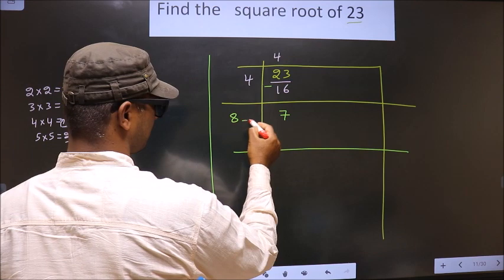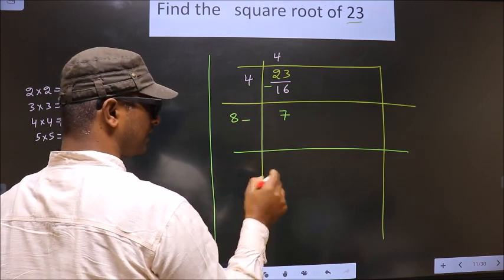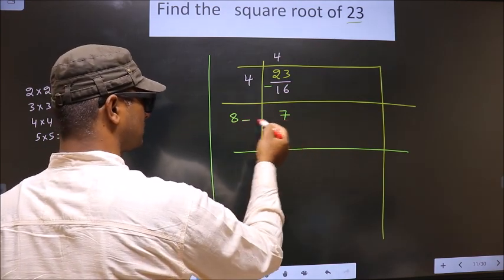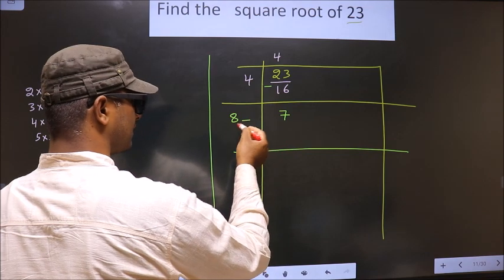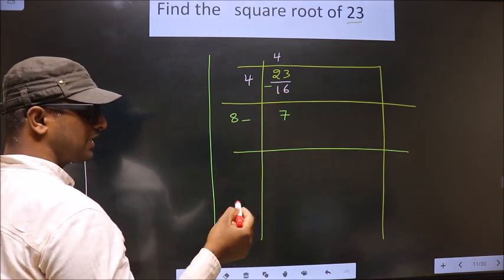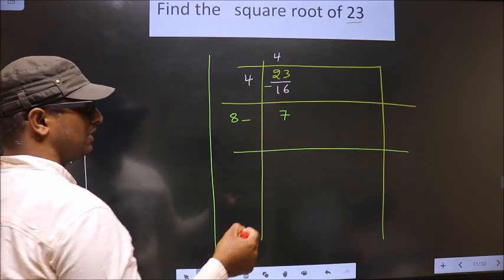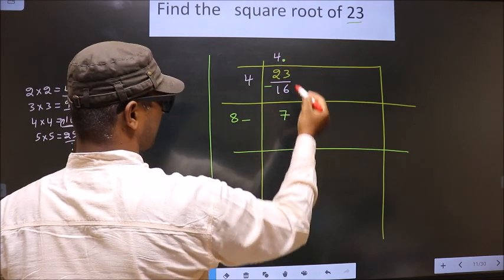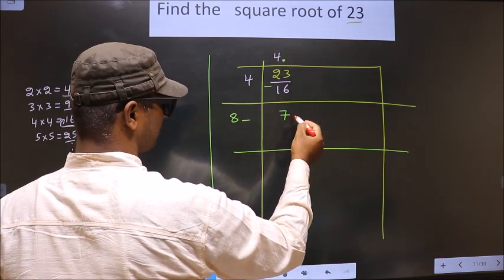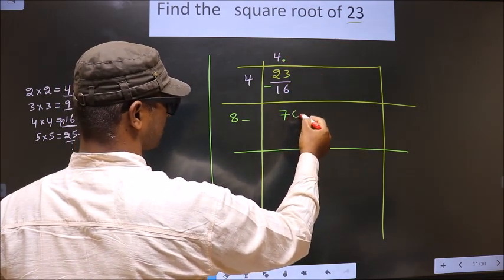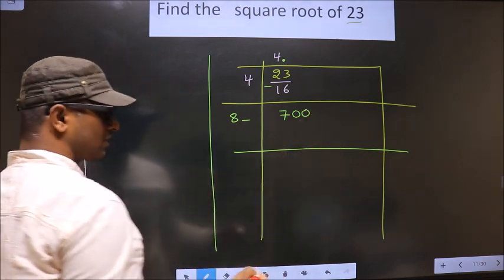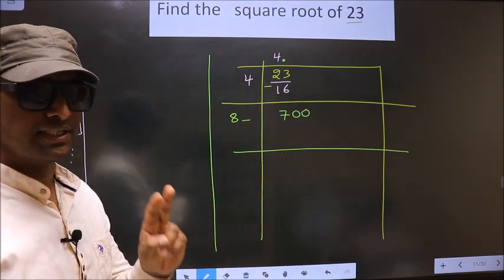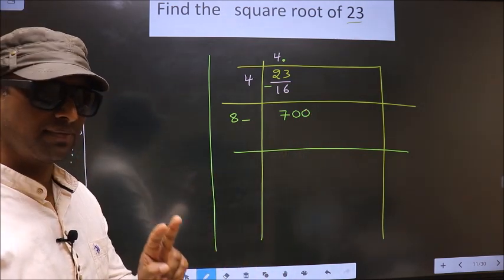Now we should write a number here. But when we write the number here, this number is smaller than this. So in normal division, we would put a dot and take one zero, but here while finding the square root, we should take two zeros. Remember that.